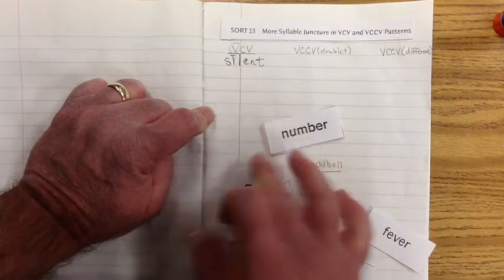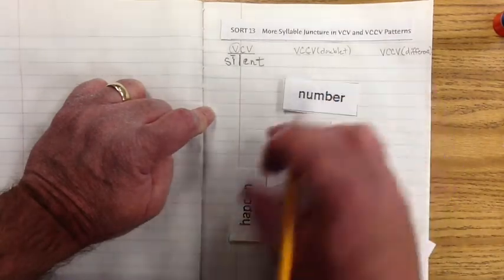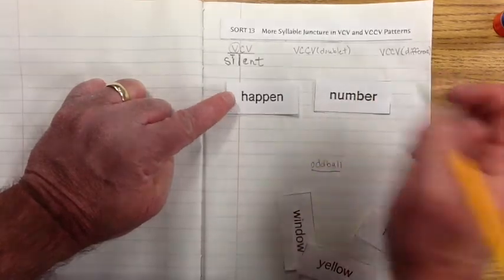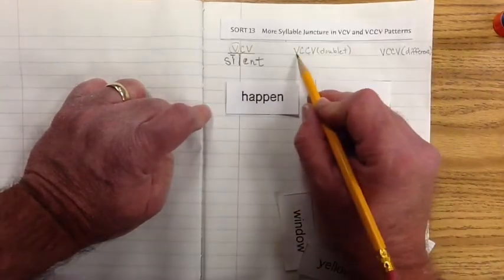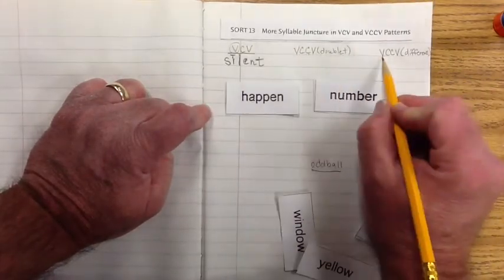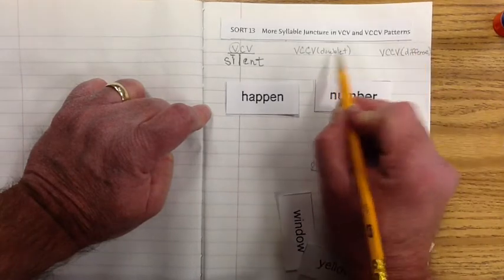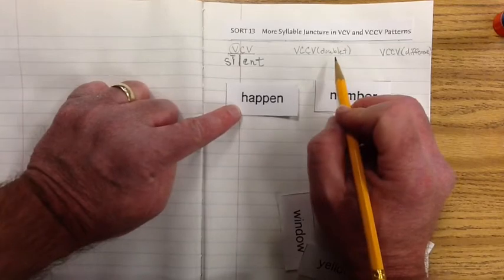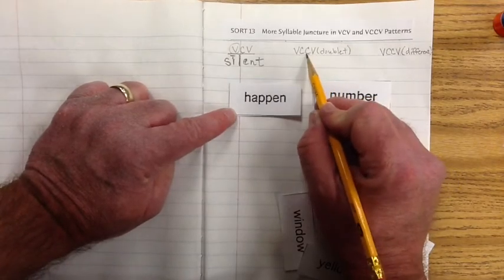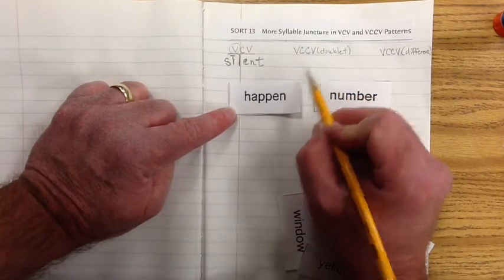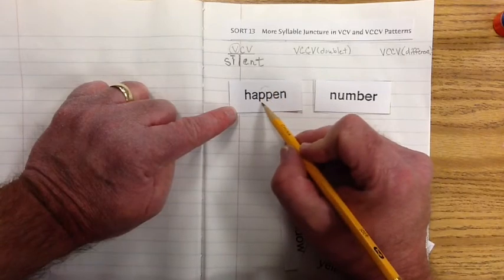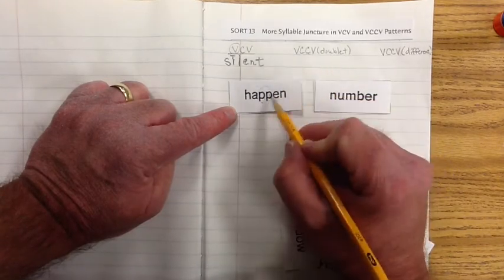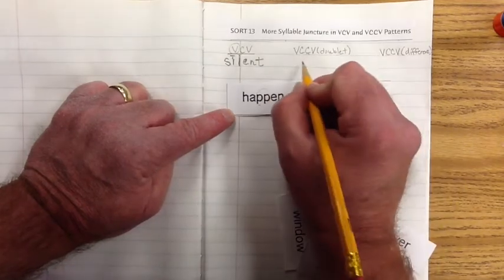Let's go to our next one. Let's look at the word number and happen. We have doublet. We have the same vowel pattern, vowel-consonant-consonant-vowel, but we have one that's doublet and one that's different. So I'm thinking that doublet means that the consonants that are double are the same. And if we look at happen, that would be doublet, wouldn't it? Because they're the same. It's double and the consonants are the same.